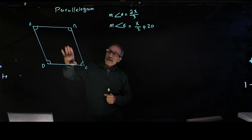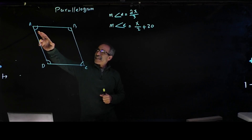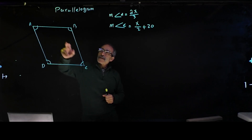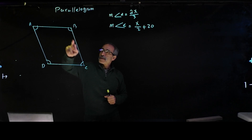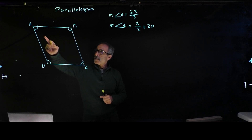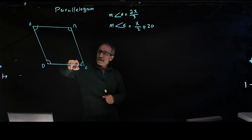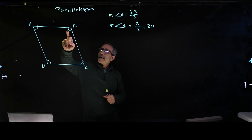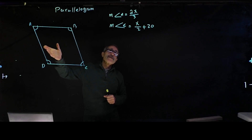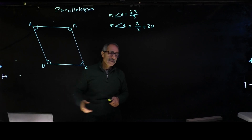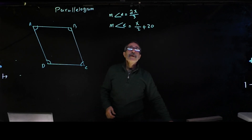One thing we know about the parallelogram: the opposite angles are equal. This is equal to that, and that's equal to that. So angle A is equal to angle C, and angle B equals angle D. We're going to take advantage of that, and that's how we're going to solve this problem.